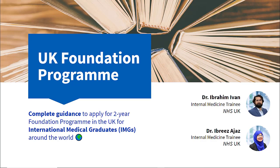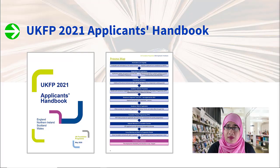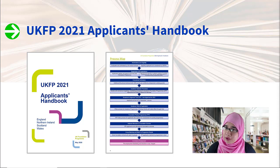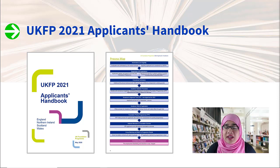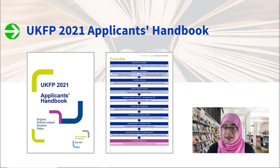We're going to be talking about the UK Foundation Program and give you a good rundown of what you need to expect as an IMG. The holy grail for you to understand this entire process is the UKFP Applicant Handbook. What we've got here is a photo of the 2021 version, but every year they'll come up with a new version, so please make sure you have the correct year's handbook. It's a very well-written and extensive handbook covering everything you need to know about the process, timelines, and what you need at every step of the way.